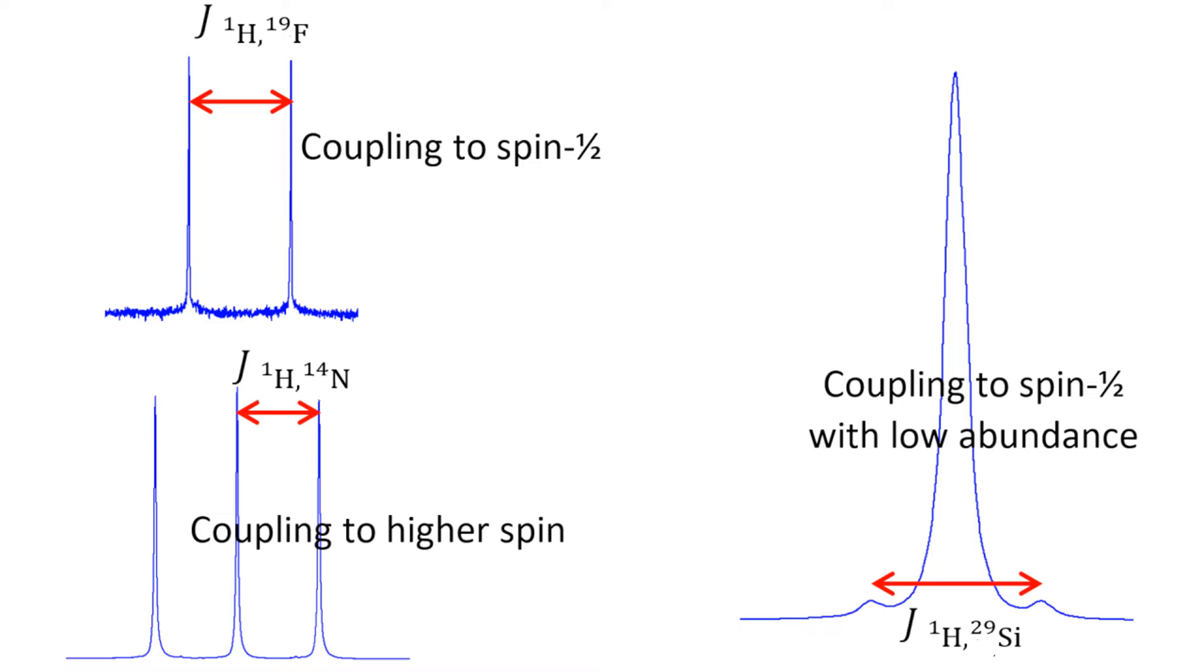Coupling between protons or nuclei of the same type is called homonuclear coupling. Heteronuclear coupling is the coupling between different nuclei. A proton signal may be split by another proton or by a different nucleus, such as fluorine.